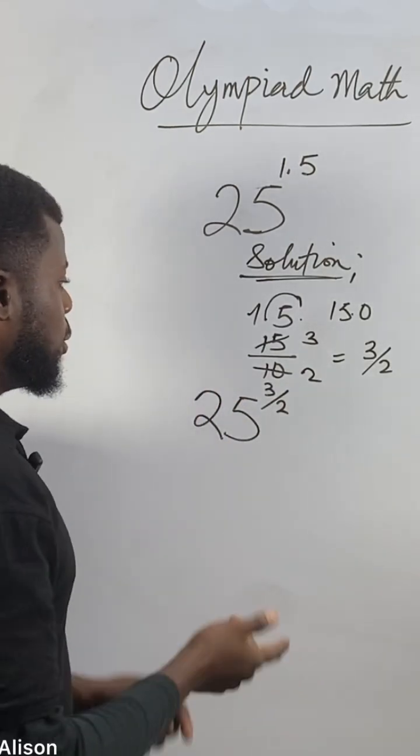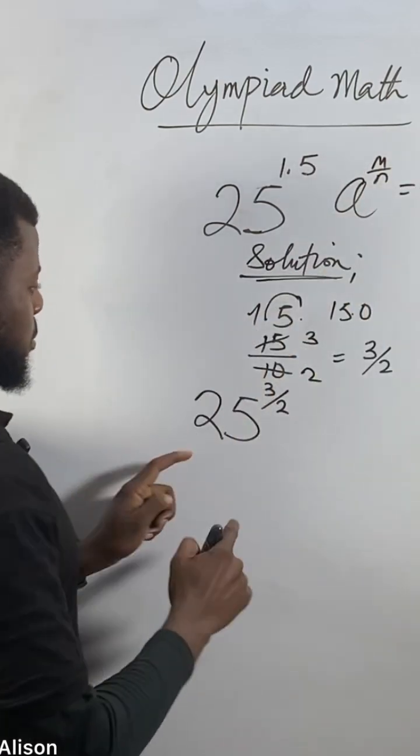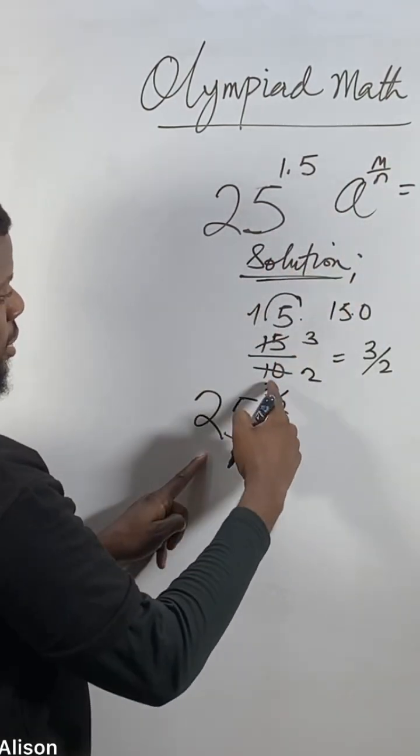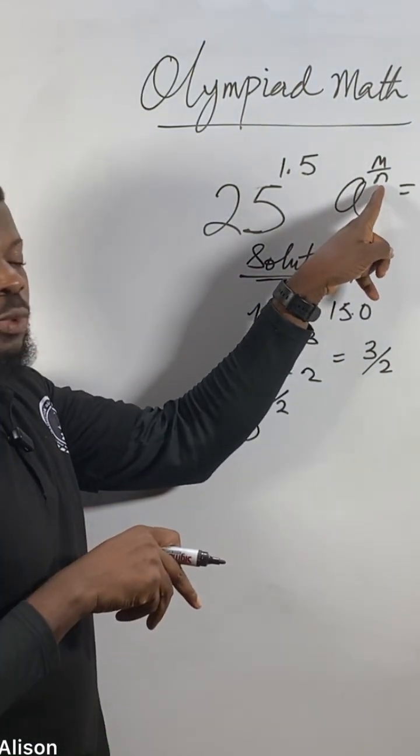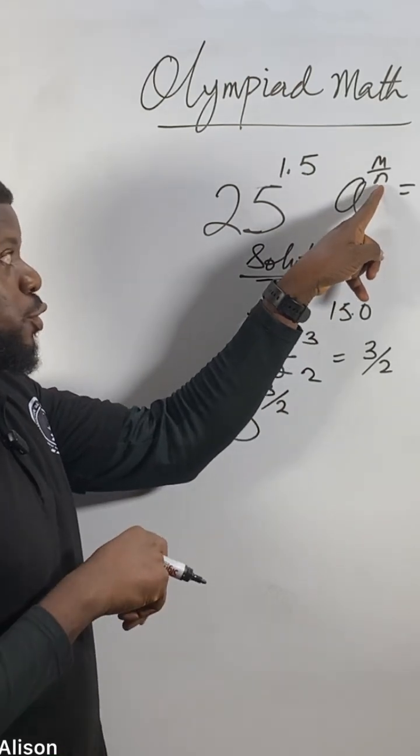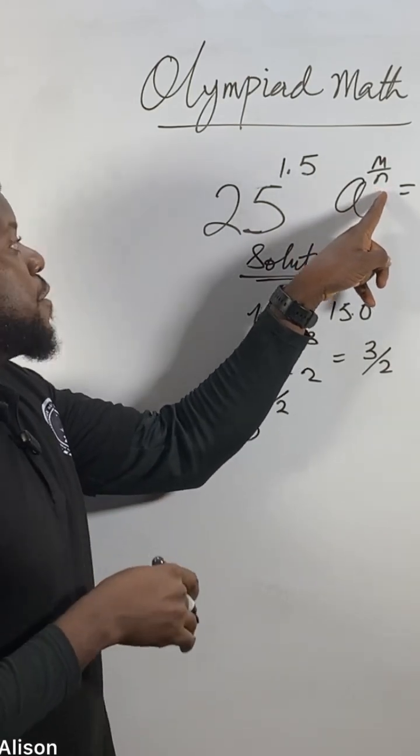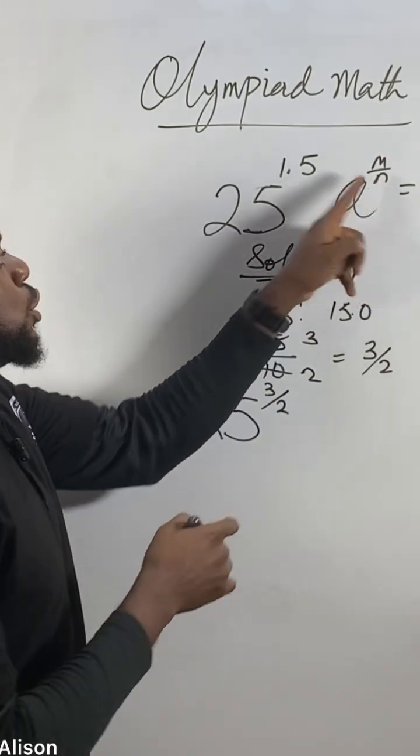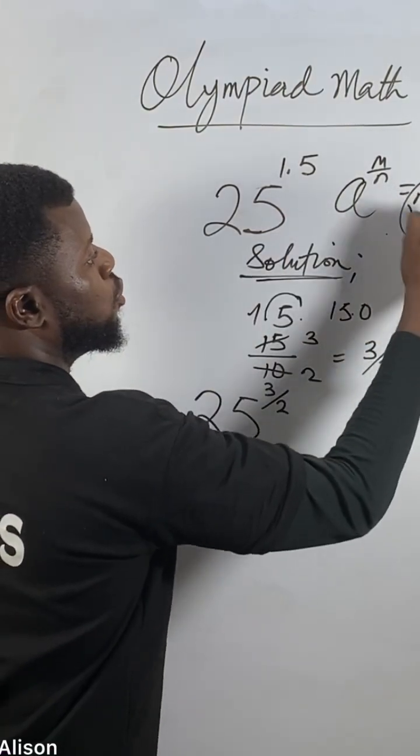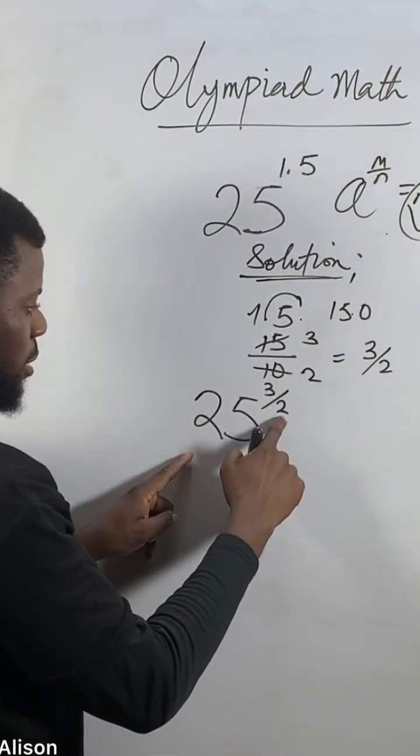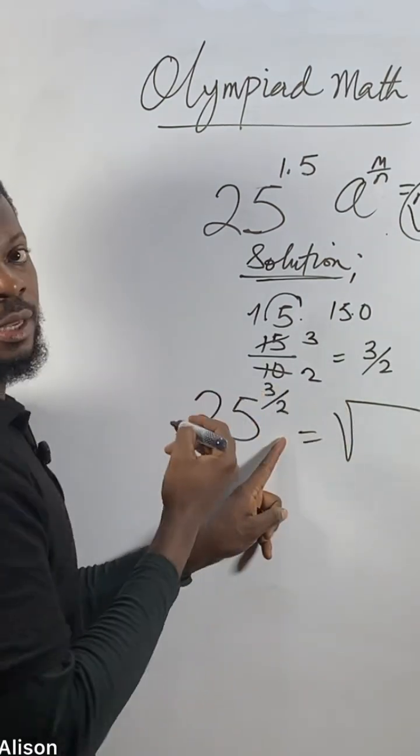When you see the model a to the power of m over n, this resembles 25 to the power of 3 over 2. The denominator n will change to become the nth root. If it's 2, it will be square root. If it's 3, cube root. If it's 4, fourth root. So this becomes the square root because it's 2. Square root of 25, all to the power of 3.